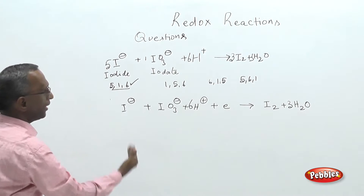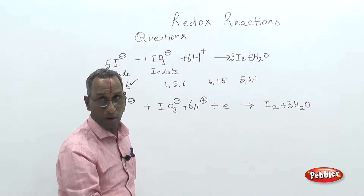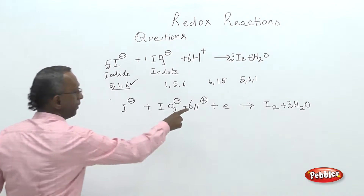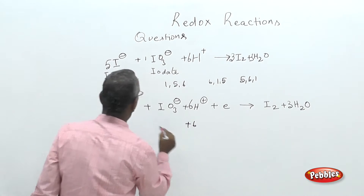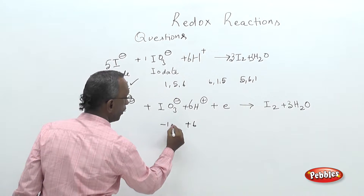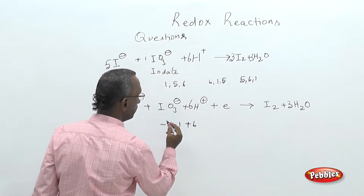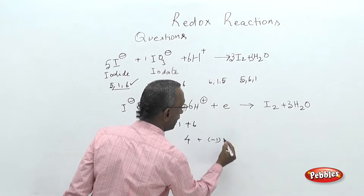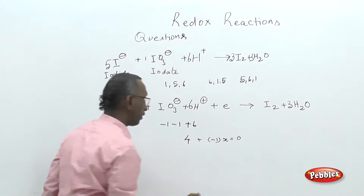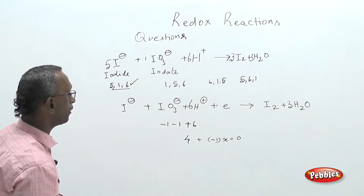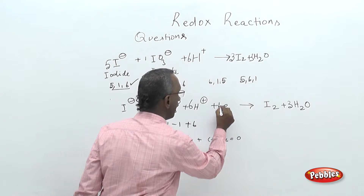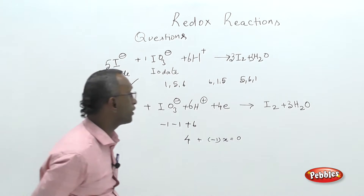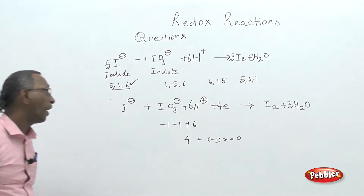The method involves first balancing for the masses — elements on either side — then balancing for the charges. The reactant charge: 6 protons means plus 6; 1 iodide means minus 1; IO₃⁻ is minus 1; so 6 minus 1 minus 1 equals plus 4. The charge on 1 electron is minus 1. Setting x minus 4 equal to 0 gives x equal to 4, meaning 4 electrons are involved in this transfer.